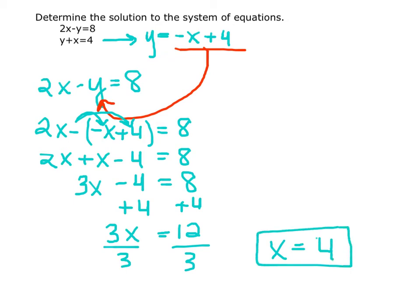Now that we have what x equals, we can plug that in to either one of the equations to solve for y. Since our second equation is already solved for y, let's plug in x equals 4 to see what y equals. So y equals negative x plus 4.